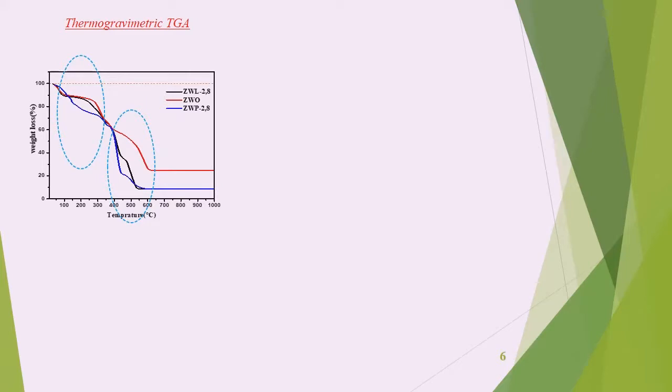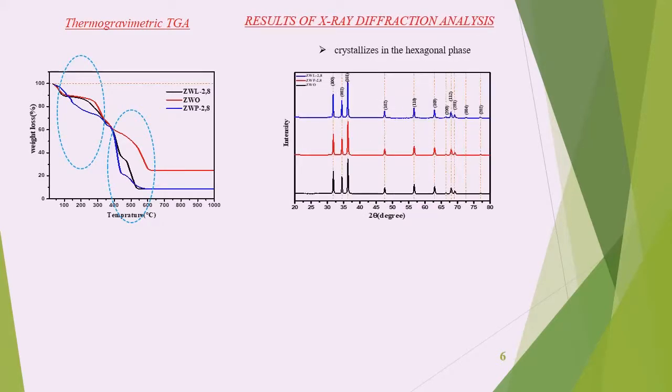The degradation process could be divided into two steps. The first one before 160 degrees Celsius is attributed to the removal of residual free solvent such as ethanol and water. The second step, with significant weight loss of 65 percent between 160 and 400 degrees Celsius, corresponded to the complete decomposition of PVP and zinc acetate and formation of zinc oxide, which confirmed the chosen calcination temperature.